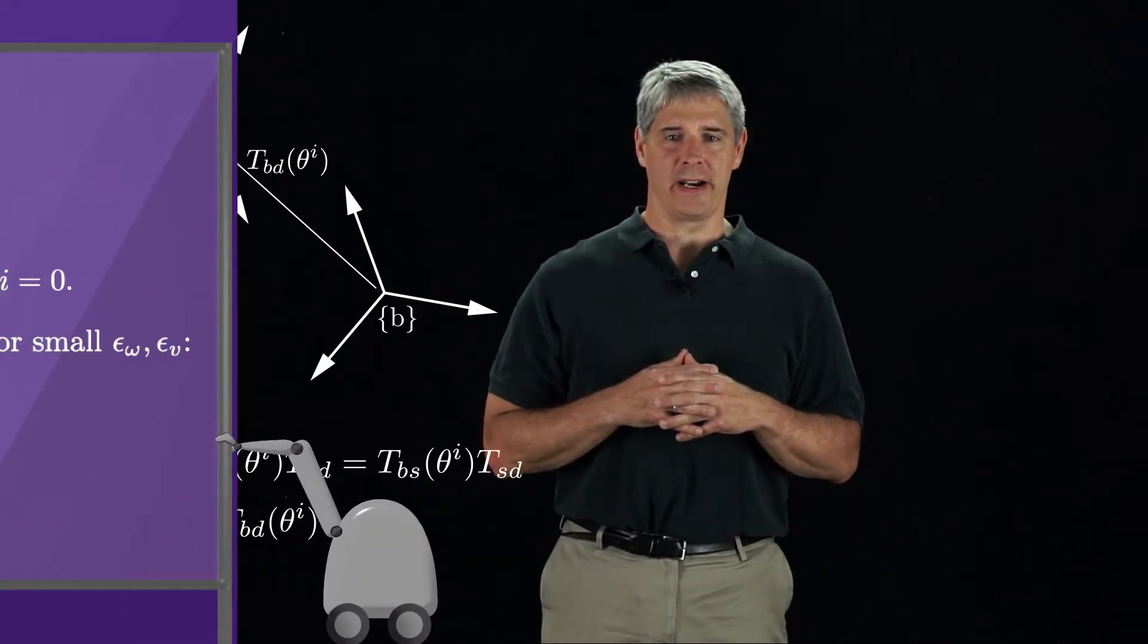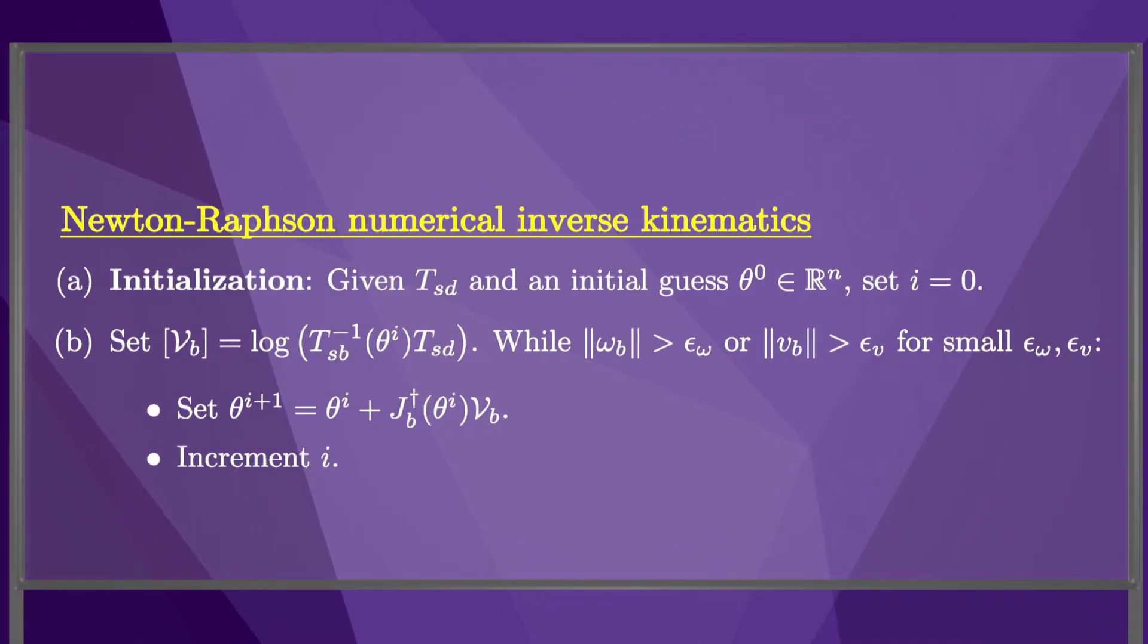Now we can write the modified algorithm as shown here. We begin with an initial guess theta zero, then we calculate the matrix representation of the body twist VB that moves the B frame to the D frame. If the angular component omega B and the linear component VB of the body twist are both small, then theta zero is a good solution to the inverse kinematics problem.